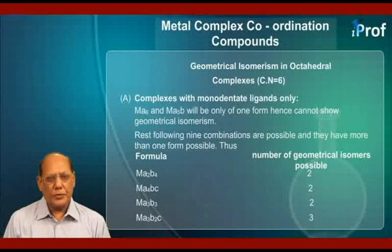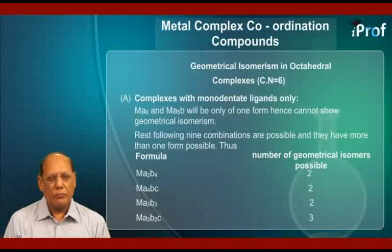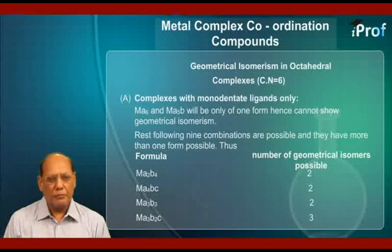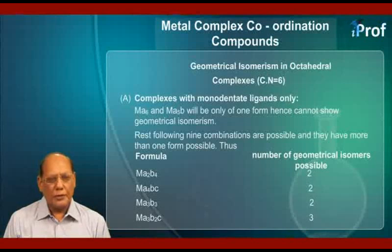MA6 and MA5B will be only of one form, hence cannot show geometrical isomerism. The rest of the following 9 combinations are possible and they have more than one form possible. These are with the number of geometrical isomers possible, given in the following table.